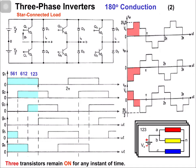From the equivalent circuit, phase C voltage vcn = -(2/3)Vdc, and phase A and phase B voltages are equal to (1/3)Vdc. Phase A is (1/3), phase B is (1/3), and phase C is -(2/3). This is the voltage set obtained in this switching interval.